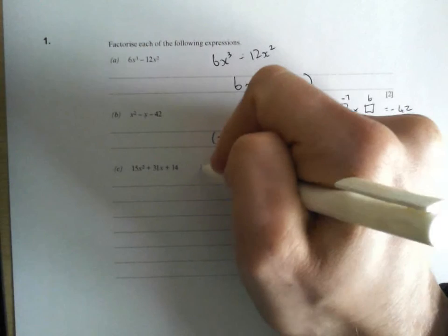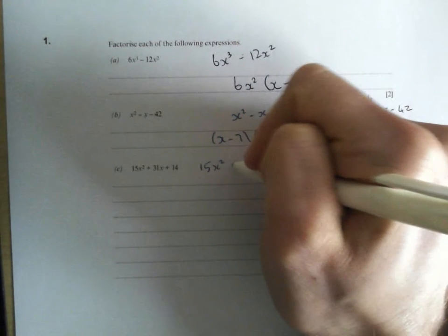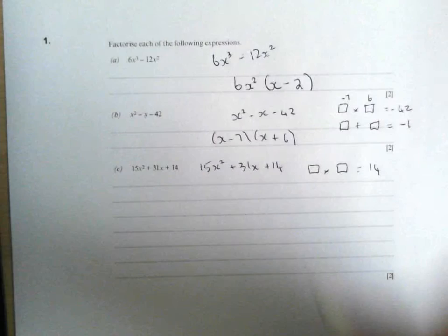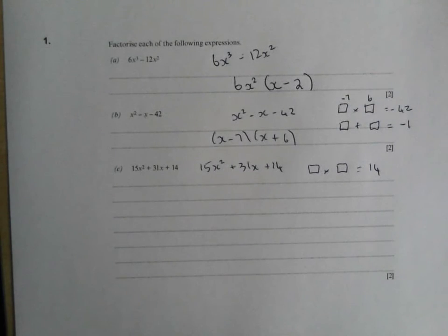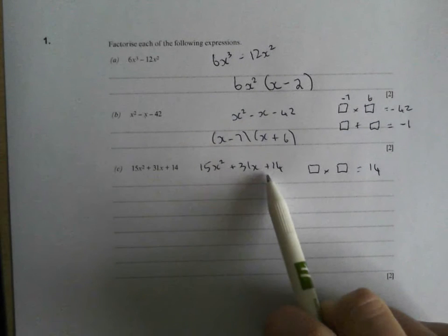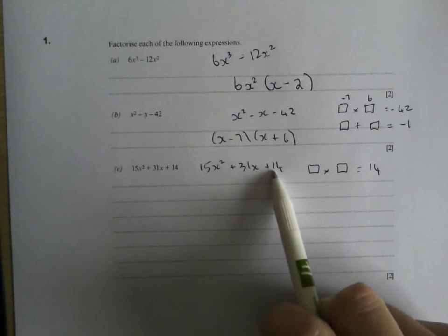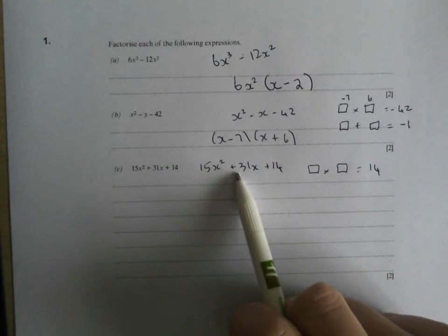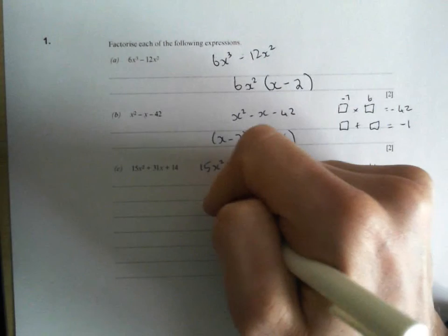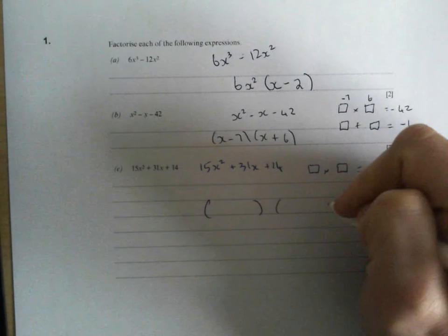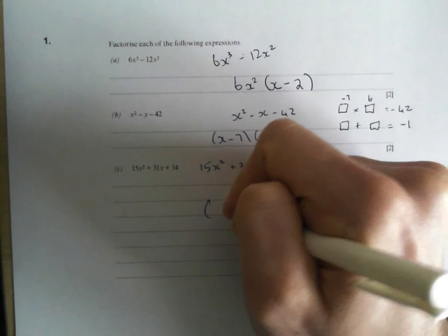So I still know my two numbers have got to times together to make 14. I also know that's positive 14. So that's going to tell me it's either a positive times a positive or a negative times a negative. But I've got positive 31x's. So I know that whatever's in my bracket, they're both going to be pluses.